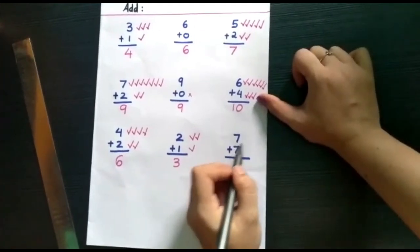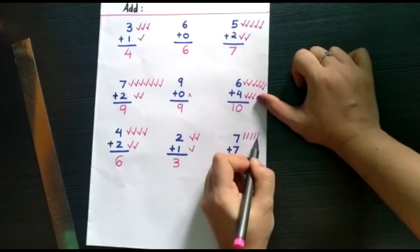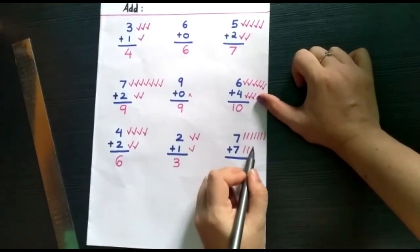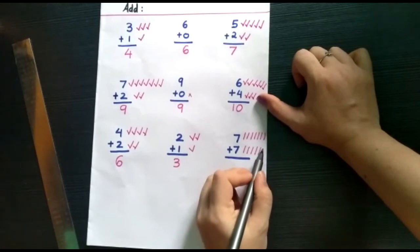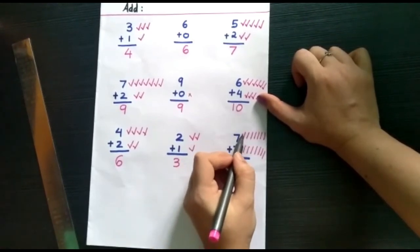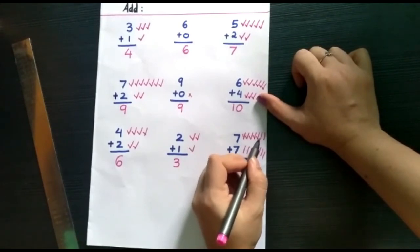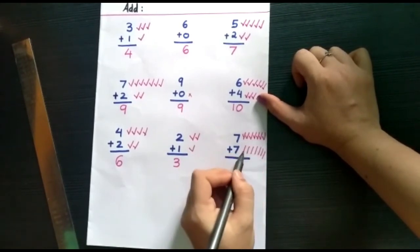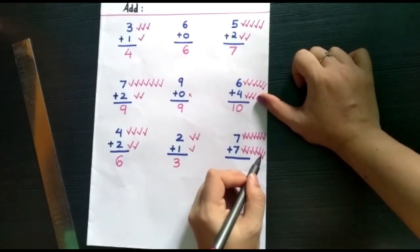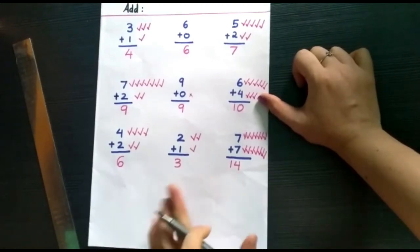Seven plus seven. One, two, three, four, five, six, seven. One, two, three, four, five, six, seven. So all together, seven plus seven: one, two, three, four, five, six, seven, eight, nine, ten, eleven, twelve, thirteen, fourteen. Seven plus seven will be fourteen.